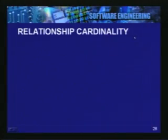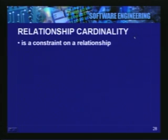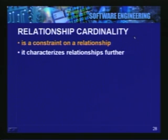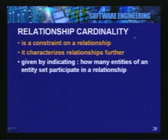We were talking about relationship cardinality as an additional constraint on a relationship. It tries to characterize the relationship more precisely by specifying how many entities of one set may relate with another entity in another set as part of the relationship. By cardinality we are indicating how many entities — in terms of one or more — are related to entities from another set in forming a relationship.